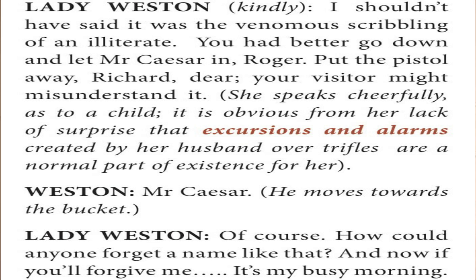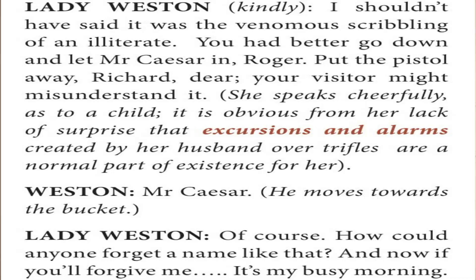Lady Weston says: 'I should not have said it was the venomous scribbling of an illiterate.' She tells Roger to go down and let Mr. Caesar in, and asks Weston to put the pistol away so that his visitor does not misunderstand. She speaks cheerfully, as if to a child. It is obvious that the excursions and alarms created by her husband are normal trifles to her. Weston moves toward the bucket in dismay. The parcel, it turns out, contained his new velvet coat. Lady Weston says she had tried to tell him many times.